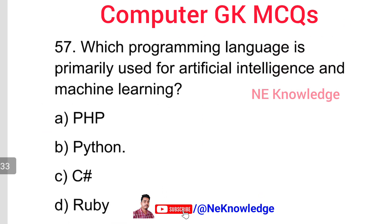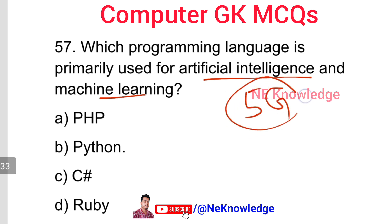Question number 57: Which programming language is primarily used for artificial intelligence and machine learning? The correct programming language used for AI and machine learning is Python. Option number B — Python — is the correct answer.